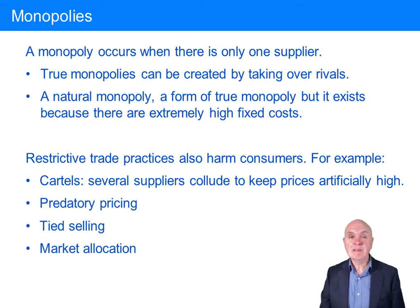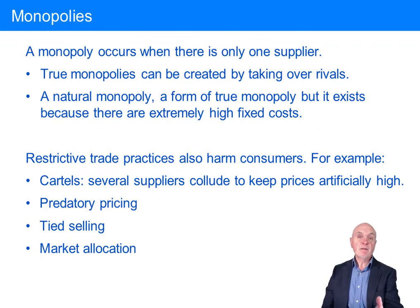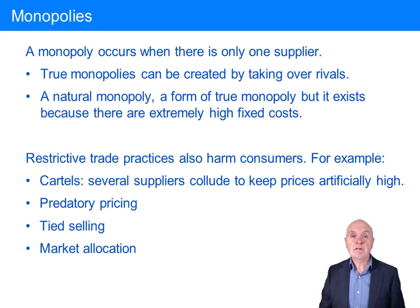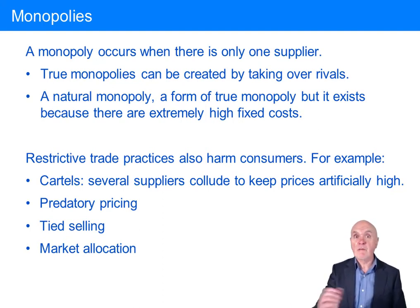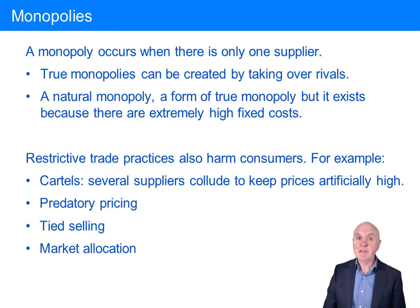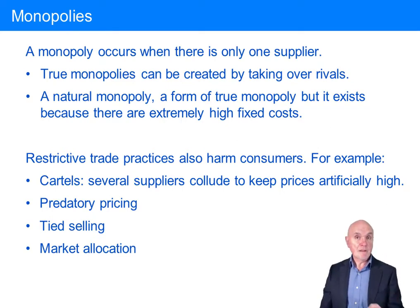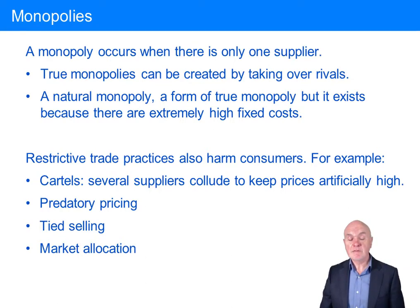Predatory pricing is where a relatively rich supplier drops their price maybe by 50%. And even though they're making a loss, because they've got lots of money in the bank, they can sustain this loss for six months. But other suppliers who are in a weaker financial position — if they were to match that price and make a loss, then they would go bankrupt. So it's driving people out of the market by this very aggressive pricing.